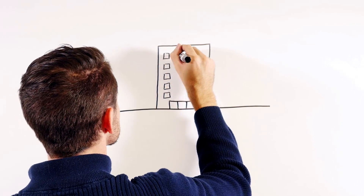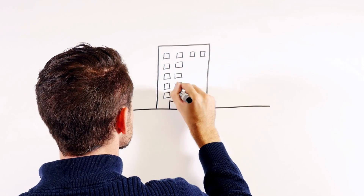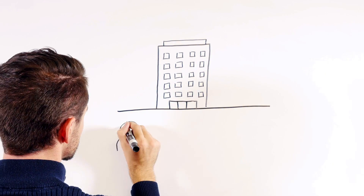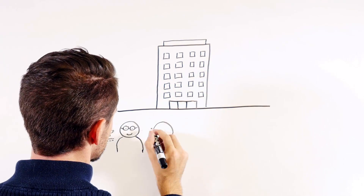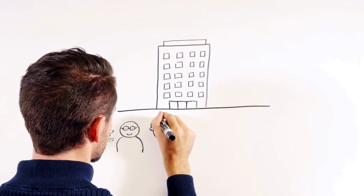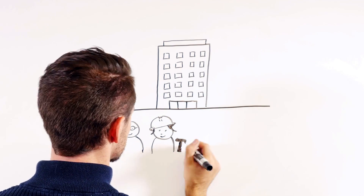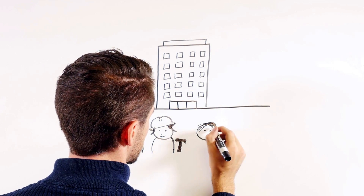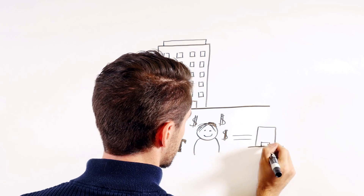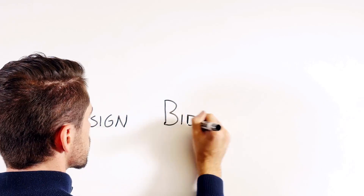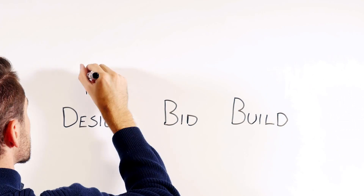Describing how buildings get built is a bit like describing how laws get made in the United States. One can make general statements about how the process works, but there are lots of ways the process can differ depending on the project, its location, the people and organizations who have a say in the decisions, the organizations responsible for doing the work, and the financial considerations. Nevertheless, understanding the basic process is a place to start.